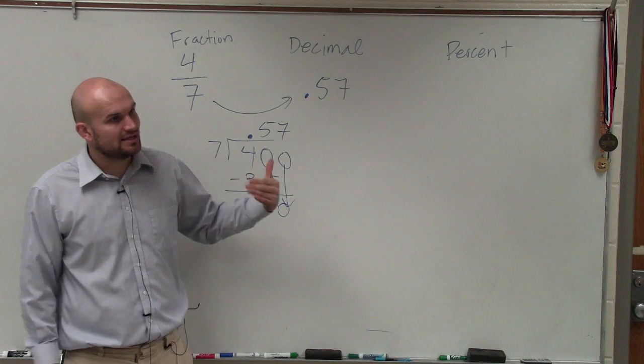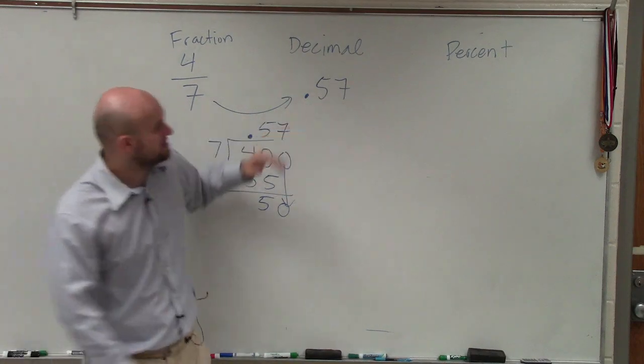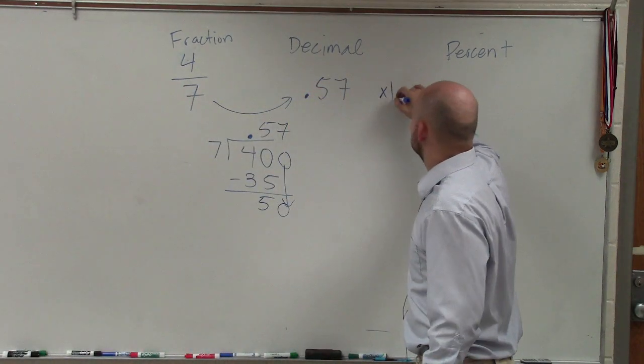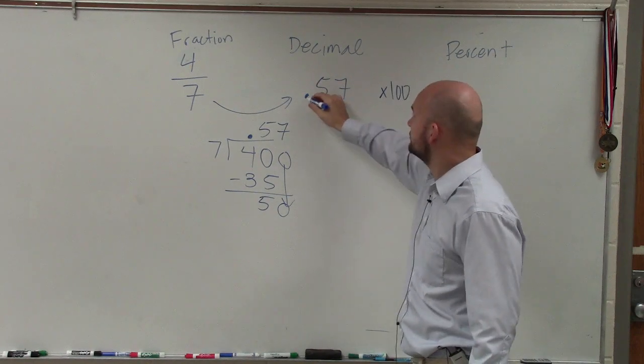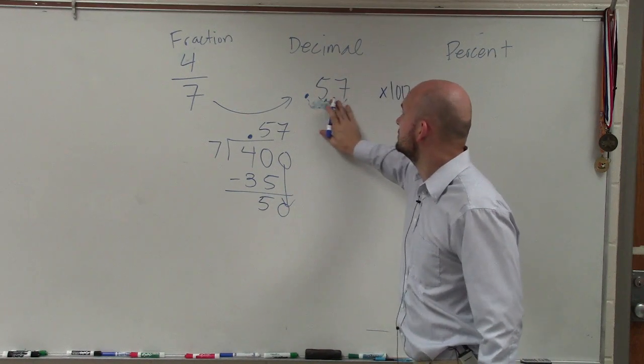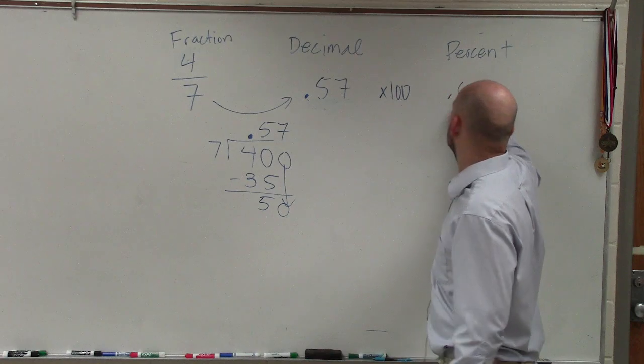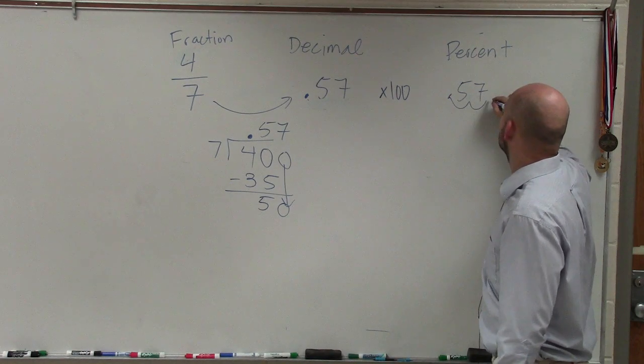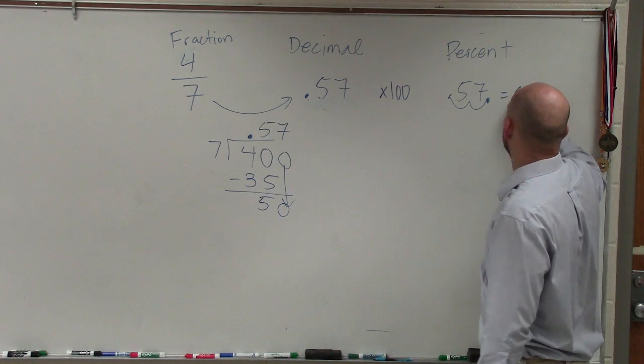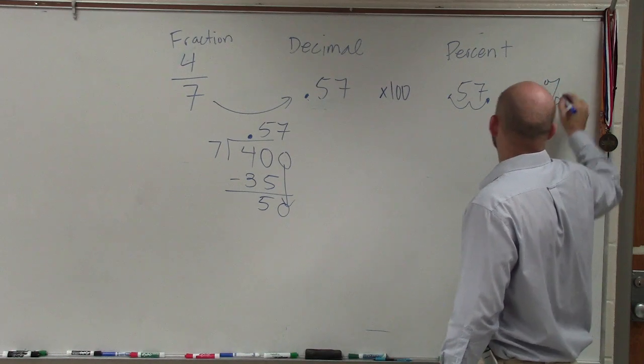So basically, ladies and gentlemen, 0.57, all we simply need to do to write a decimal to a percent is just multiply by 100, which is going to move the decimal point over two units, which is going to equal 57%.